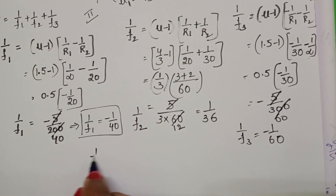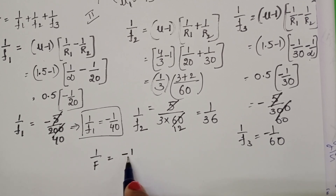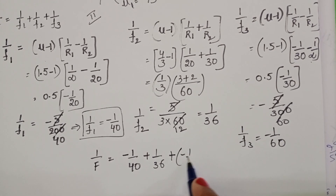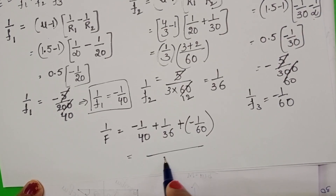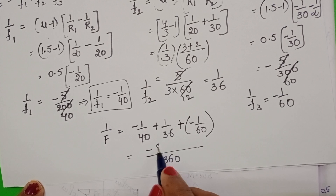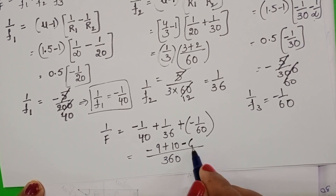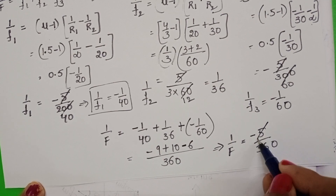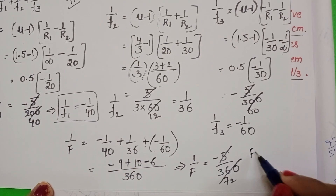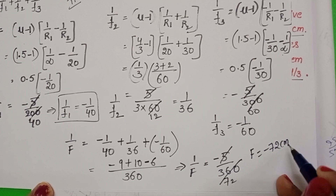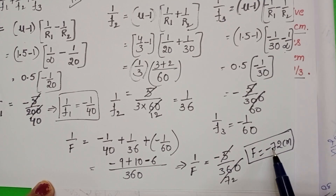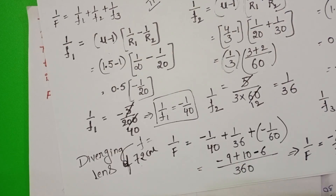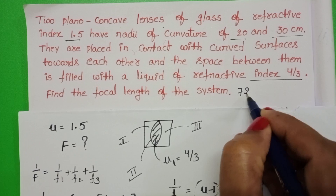Now find the focal length of the system: 1/F = 1/F1 + 1/F2 + 1/F3 = -1/40 + 1/36 - 1/60. Taking LCM as 360: 1/F = -9/360 + 10/360 - 6/360 = -5/360. Therefore the focal length of the system is -72 cm. Since the focal length is negative, the combination behaves like a diverging lens, with focal length 72 cm.